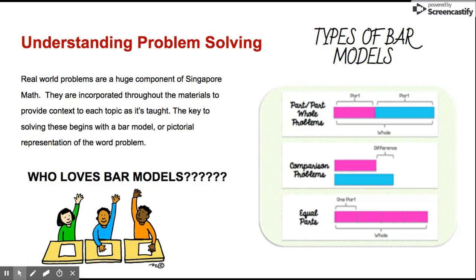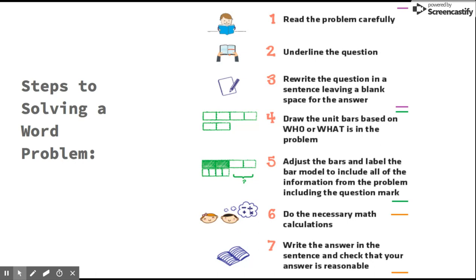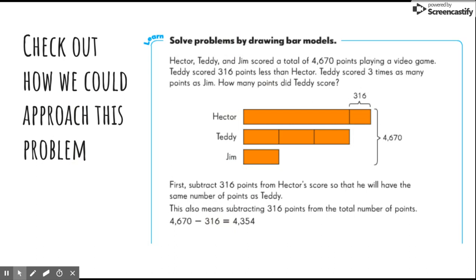Singapore math focuses on problem solving, which creates context for the math concepts we are teaching and should be integrated at the beginning, middle, and end of every new concept. In grade 5, students should be familiar with the use of bar models. This is an exceptional tool for students to pictorially represent their thinking and help guide them through problems. To be honest, now that I know about this tool, I can't approach a word problem without it. We encourage our students to follow seven steps when approaching a word problem. Here's an example of a fifth grade word problem and how a bar model could help solve it — feel free to pause to look at it more carefully.